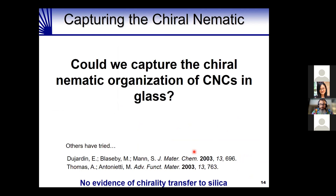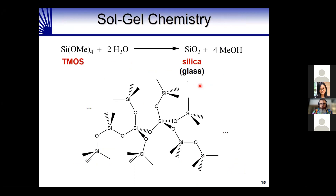Our story begins with the idea: could we capture the chiral nematic organization of cellulose nanocrystals in a solid-state material like glass? Others tried this — including Stephen Mann and Marcus Antonetti — but weren't able to transfer the chirality or helical structure to silica. In our lab, we know one chemical reaction: the sol-gel reaction. The molecule tetramethoxy silane in water undergoes hydrolysis and condensation to give SiO₂ — silica, or glass, or sand — an amorphous network of tetrahedral silicon atoms bridged by oxygens.